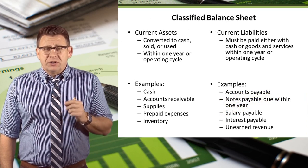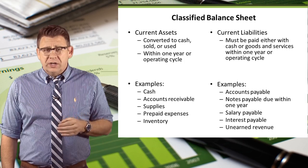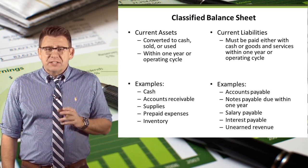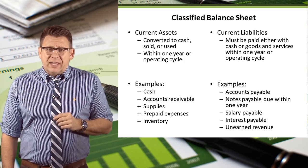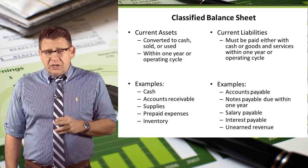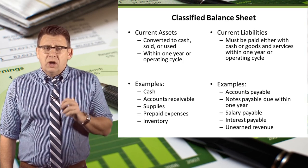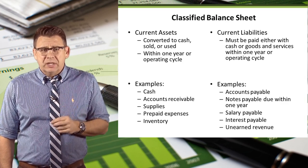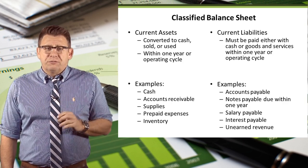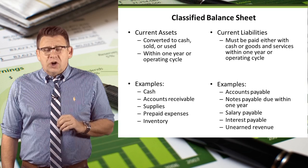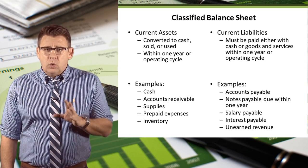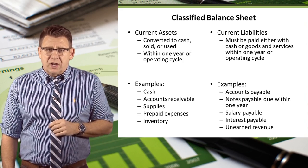Assets that will be turned to cash, sold, or used within one year or one operating cycle, whichever is more, are classified as current assets. Liabilities that will be paid within one year or one operating cycle, whichever is more, are classified as current liabilities. We will define the operating cycle in a future video, but almost all companies have many operating cycles within one year, so the year is basically the cutoff.